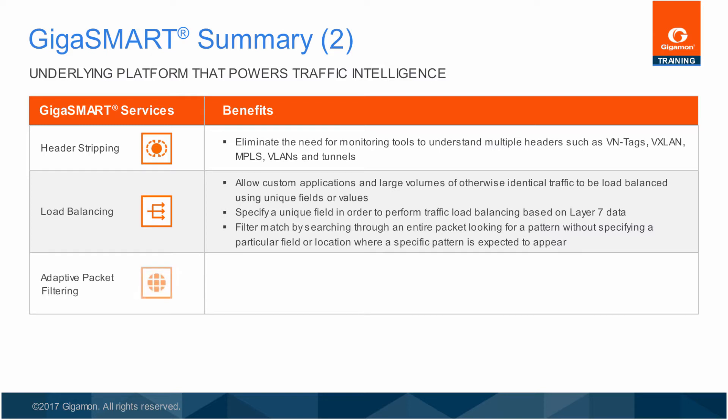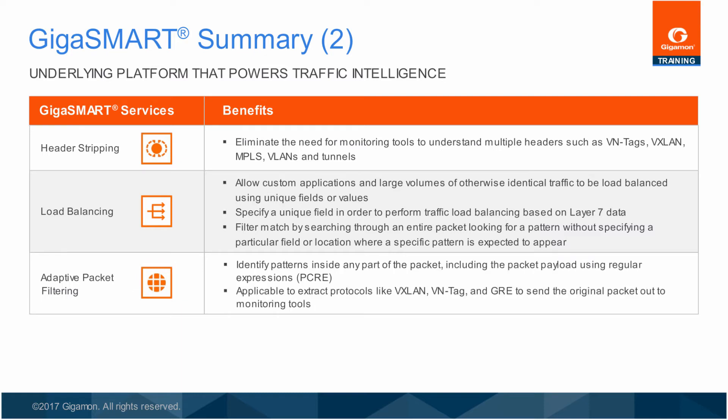Adaptive Packet Filtering provides advanced visibility into the application layer by filtering based on outer packet headers, including VXLAN, VN Tag, GTP, MPLS, etc., as well as inner-encapsulated or tunneled packet headers. Using regular expression pattern matching, APF is able to match on almost any sort of variable or string, almost anywhere in the packet. APF can also mask sensitive information in the packet before it gets stored, helping to maintain compliance with PCI and other confidentiality requirements.